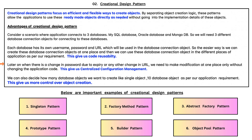Later on, when there is a change in password due to expiry, or any other change in URL, we only need to make the modification at one place without changing the application code. This gives us centralized configuration management.